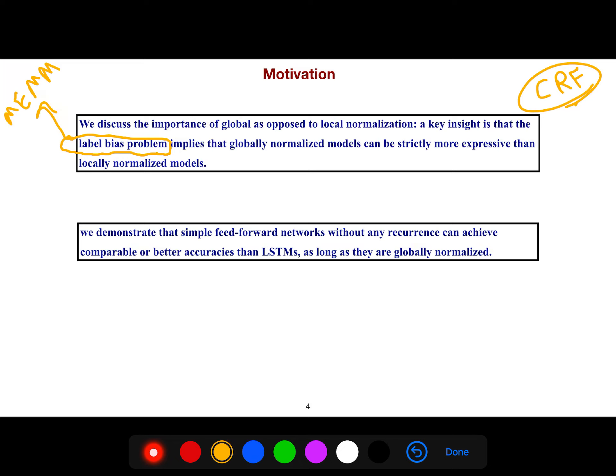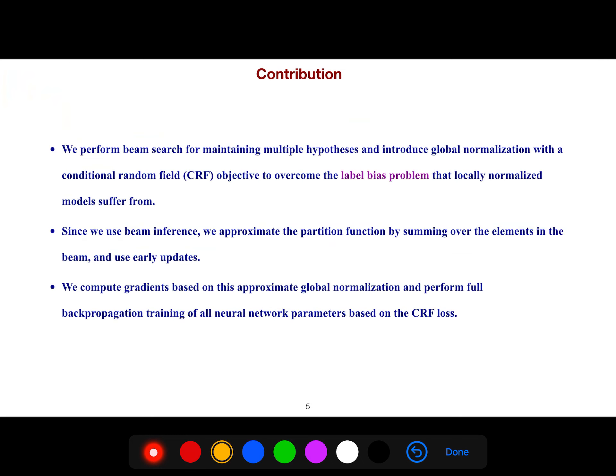We demonstrate that simple feedforward networks without any recurrence can achieve comparable or better accuracies than LSTMs, as long as they are globally normalized.